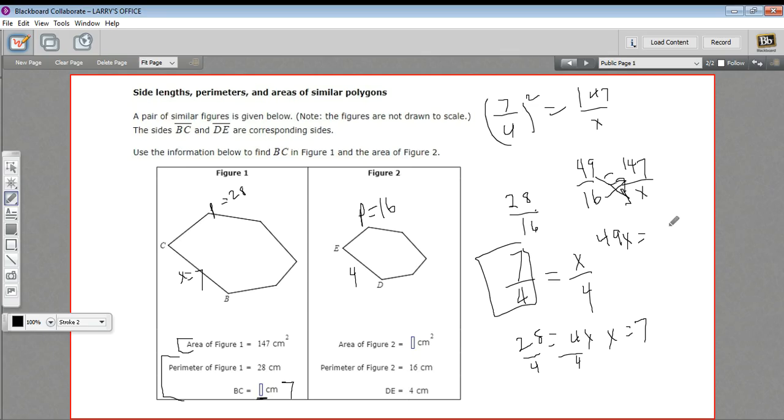And I get 2352. And then to solve for x, we need to divide both sides by 49. So we'll divide that by 49. And I'm getting x equals 48.